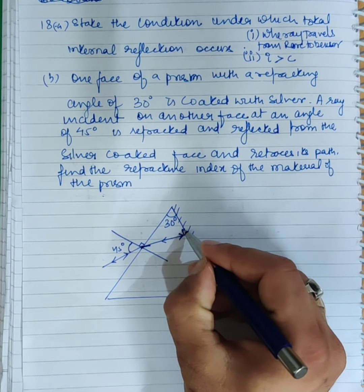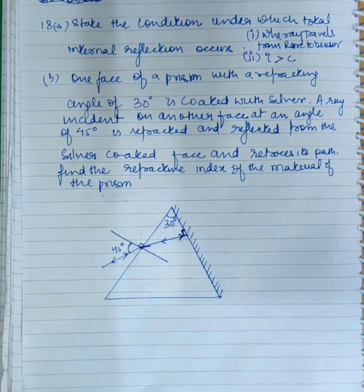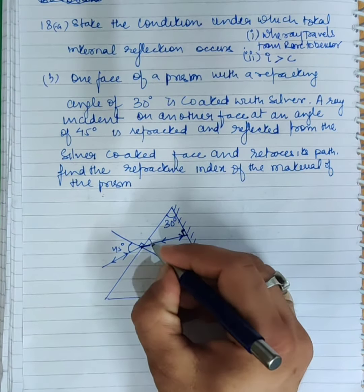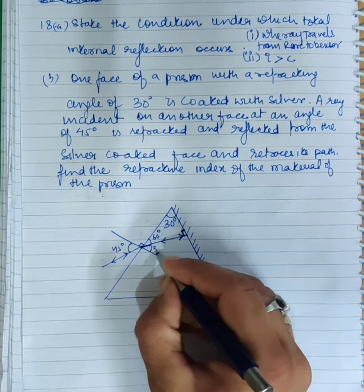So this becomes 90 degrees, this becomes 60 degrees, and this angle becomes 30 degrees.